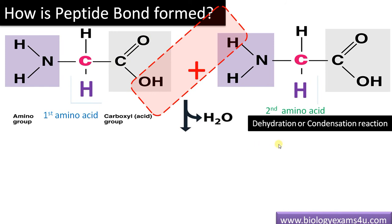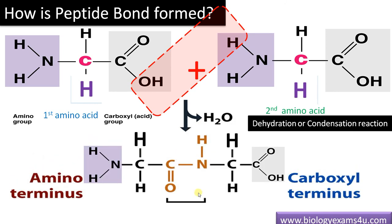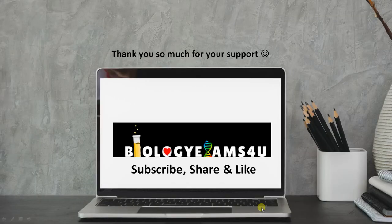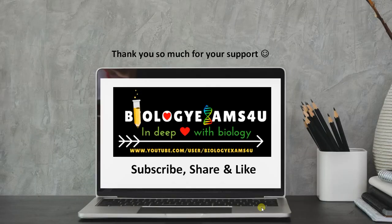This reaction is called a dehydration or condensation reaction, as water is removed. The resulting C double bond O, N, H linkage is called the peptide bond. This is how the peptide bond is formed. Now we have the dipeptide. Thank you so much for your support. You are with biologyexams4a.com.